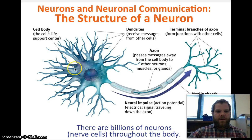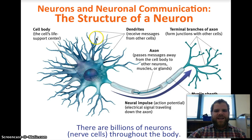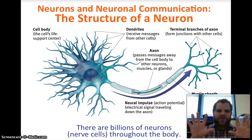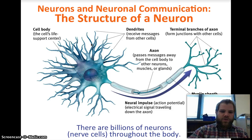The neuron has a cell body — this is where all the action is happening, this is the main neuron. Coming off the cell body are these little tendrils, which you could call tentacles — these are called the dendrites. The dendrites receive messages from other cells; they're like hands that sort of grasp and pull things in to the cell body.